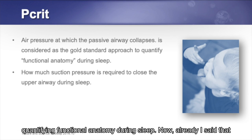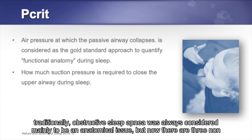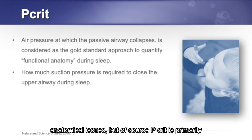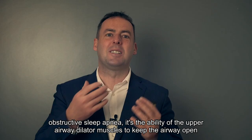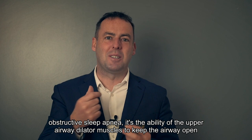Traditionally, obstructive sleep apnea was considered mainly an anatomical issue, but there are now three non-anatomical phenotypes as well. PCRIT asks: how much suction pressure is required to cause collapse of the upper airways? With OSA, it's the ability of the upper airway dilator muscles to keep the airway open versus the negative pressure created during inspiration. Collapse occurs when that negative pressure exceeds the dilating force of the upper airway muscles.